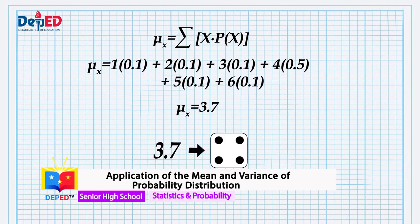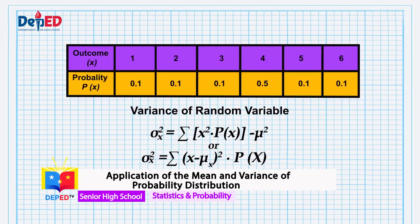We can say that the average number of dots that would appear is a number near 3.7, which is 4. If we repeat the experiment over and over, there is a higher possibility that the 4 dots will appear since the average number of dots that would appear is 4. How does the assumed value of the outcome vary from the average? An alternative formula for finding the variance is shown. You may use this to determine the variability of the assumed values from the mean. For now, let us use the alternate formula, which is the one highlighted.